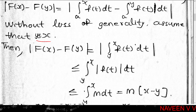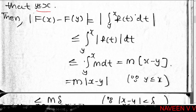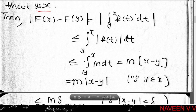So |F(x) - F(y)| = |∫_y^x f(t) dt|. By the property of integrals, |∫_y^x f(t) dt| ≤ ∫_y^x |f(t)| dt. Since |f(t)| ≤ M for all t in [a,b], applying the monotonicity property of integration gives: ∫_y^x |f(t)| dt ≤ ∫_y^x M dt = M(x - y) = M|x - y|.